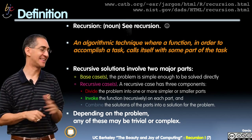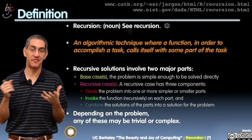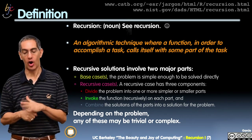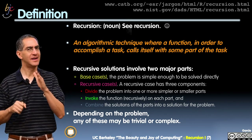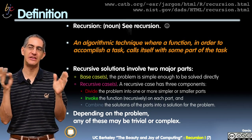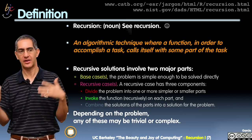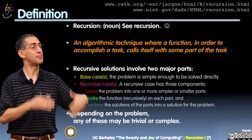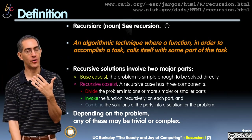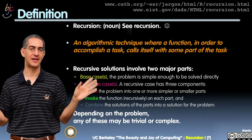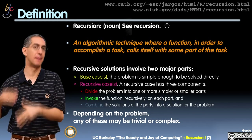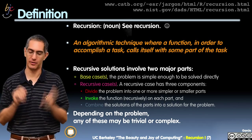The actual definition says: an algorithmic technique in which a function, in order to accomplish a task, calls itself with some part of the task. The word function is a little tight there — it really means a procedure, because it doesn't have to be a function in the purely functional sense. A function has inputs, only one output, no side effects, no state. You can recursively write a procedure, a block also.